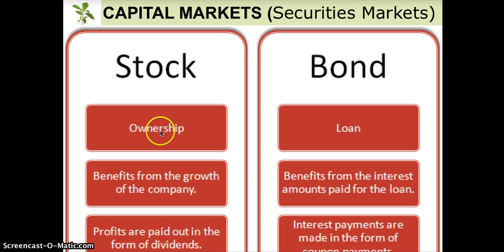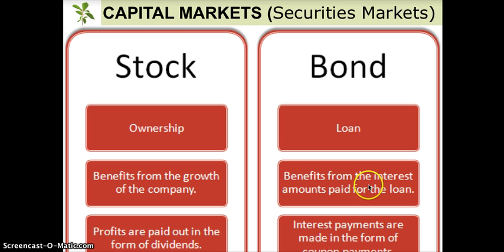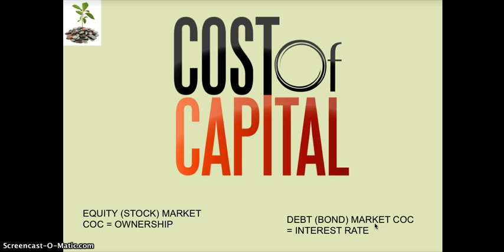What does the investor get? They get ownership in the company, they benefit if the company grows, and they potentially get paid a share of the profits through dividend payments. If an investor lends a company money, it's in the form of a loan and they benefit from interest payments on a regular basis. From the corporation's side, they have to consider what they're giving up to people who purchase shares of stock — they're giving up ownership. And depending upon how much ownership investors are demanding, that will determine whether the company wants to sell its stock to the public.